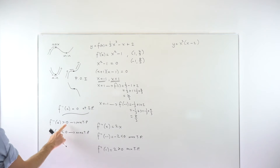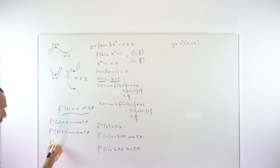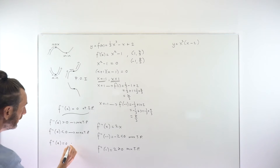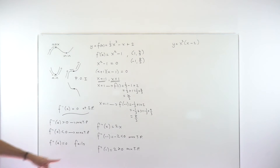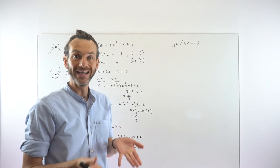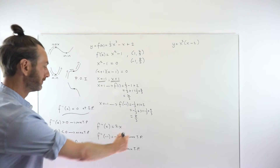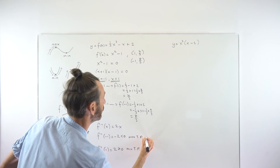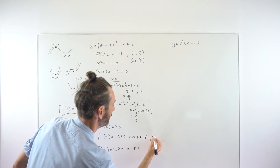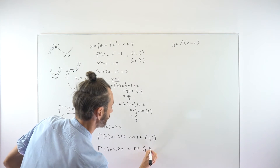The third scenario: if the second derivative evaluated at a value equals zero, the test fails and you cannot draw any conclusion. That's when we need to use another method like a nature table. So this tells us we have a maximum turning point at (−1, 8/3) and a minimum turning point at (1, 4/3).